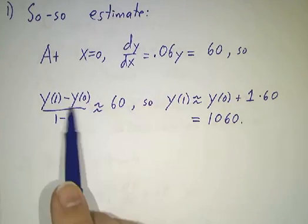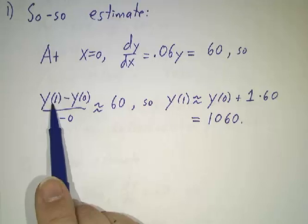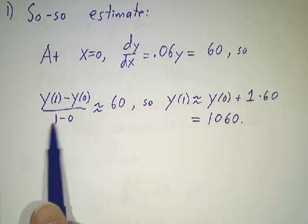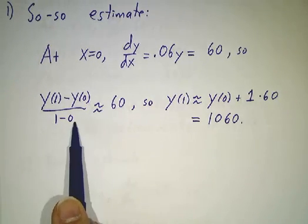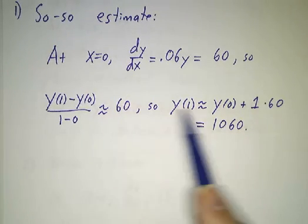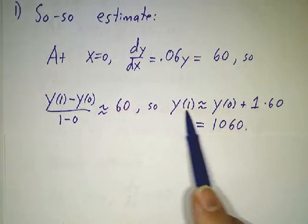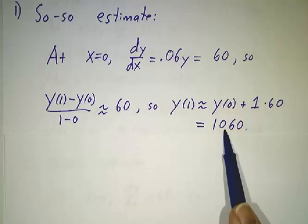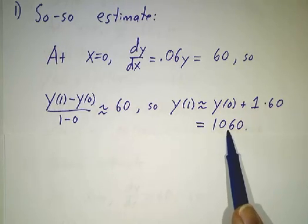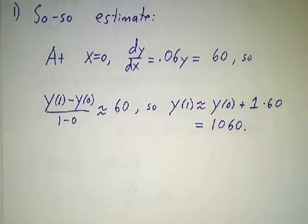We're going to increase by about 60. The rate of change, that is the y of 1 minus y of 0, divided by 1 is about 60. So y of 1 minus y of 0 is about 60. So y of 1 is about 1060. We started off at 1000, we wind up at 1060.